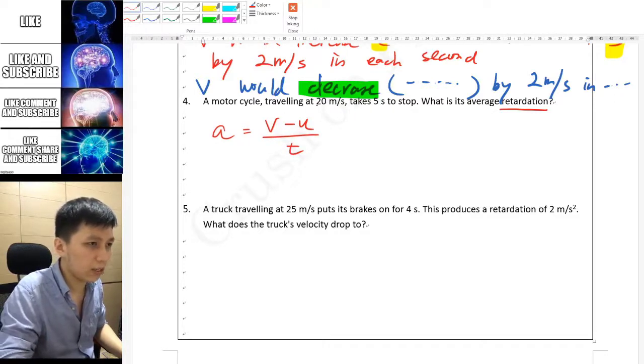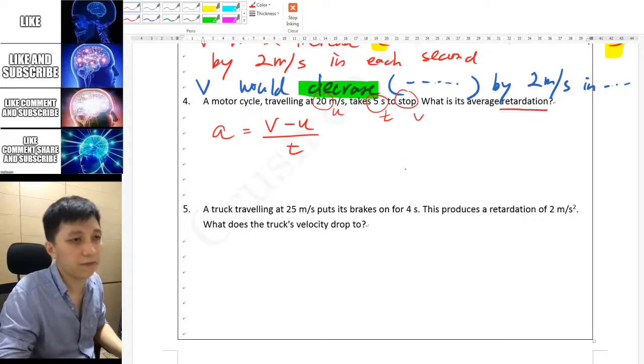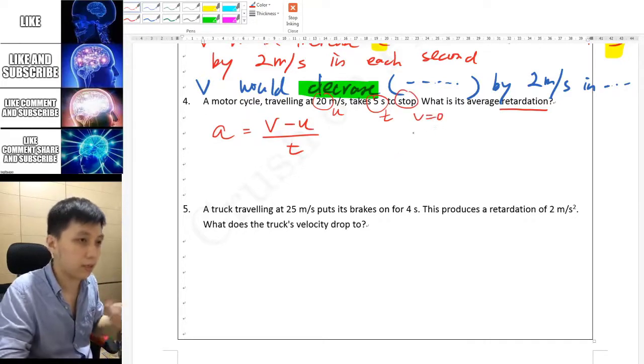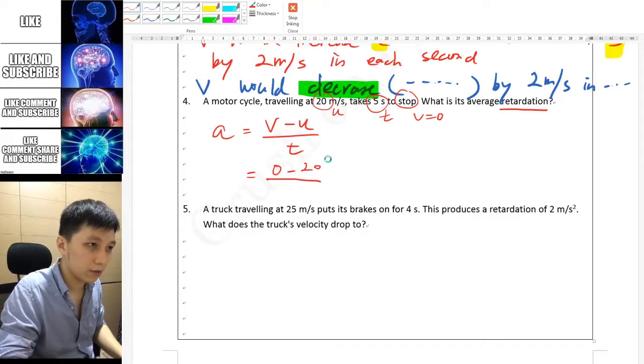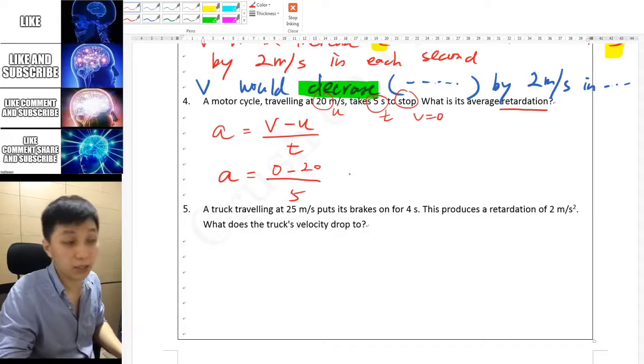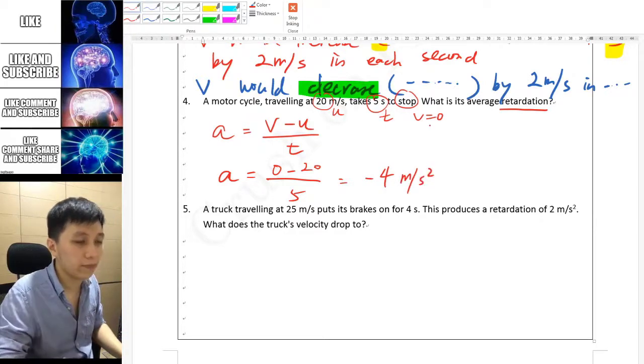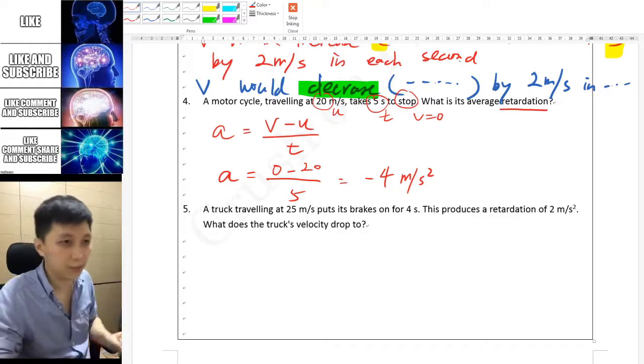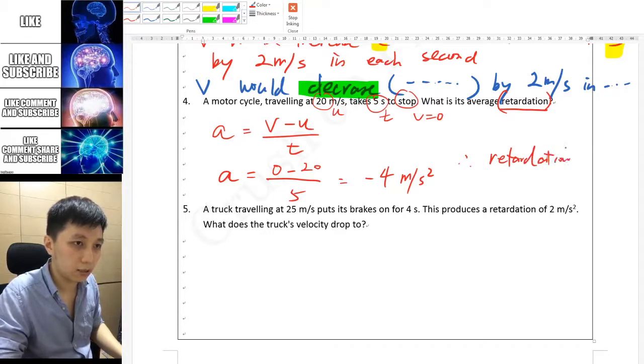Let's use the general equation: a equals v minus u over t. In our case, this should be u, this should be t, and to stop means the final velocity would equal to 0 at the end. V is 0, u is 20 in good SI unit, t is 5 seconds. That would be calculated to find acceleration. By using calculator you get negative 4 meters per second squared.